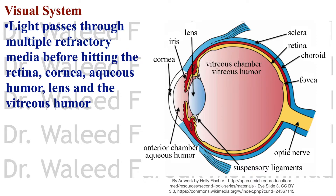Note that the direction of light goes this way, and the impulse goes the opposite way. The light travels in one direction until it hits the photoreceptors, and then the nerve impulses travel back and gather through the optic nerve. We will see this more clearly with the layers of the retina.